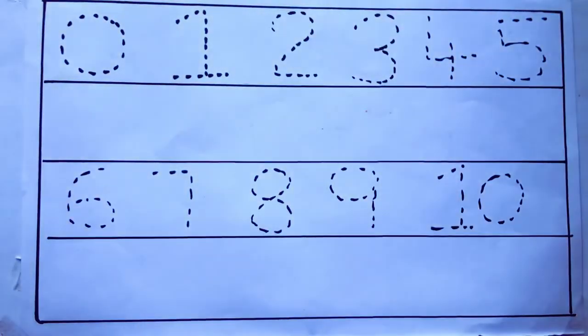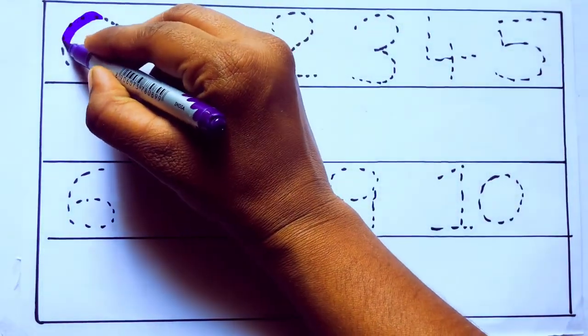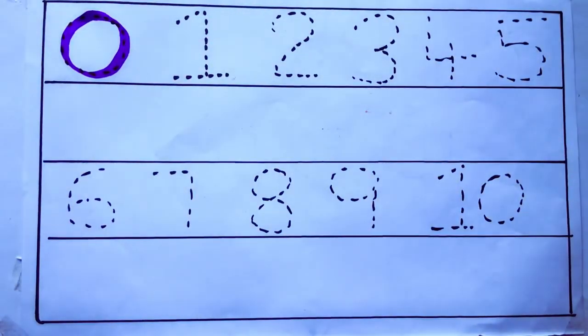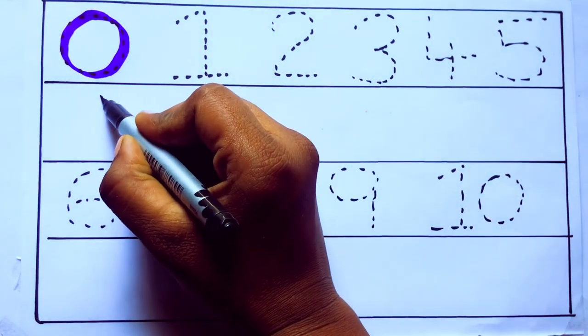Let's draw numbers. Violet color 0, Z-E-R-O. 9, 0.